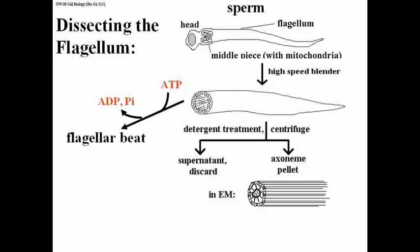If you treat with detergents that disrupt the phospholipids of the membrane, you can strip the membrane off, then centrifuge. You can collect the structures left behind — the axoneme — which moves to the pellet, and throw away the supernatant containing all the phospholipids and other membrane components. You can then re-suspend this structure called the axoneme and look at it in the electron microscope. The axoneme is the inner microtubular component of a flagellum or cilium.